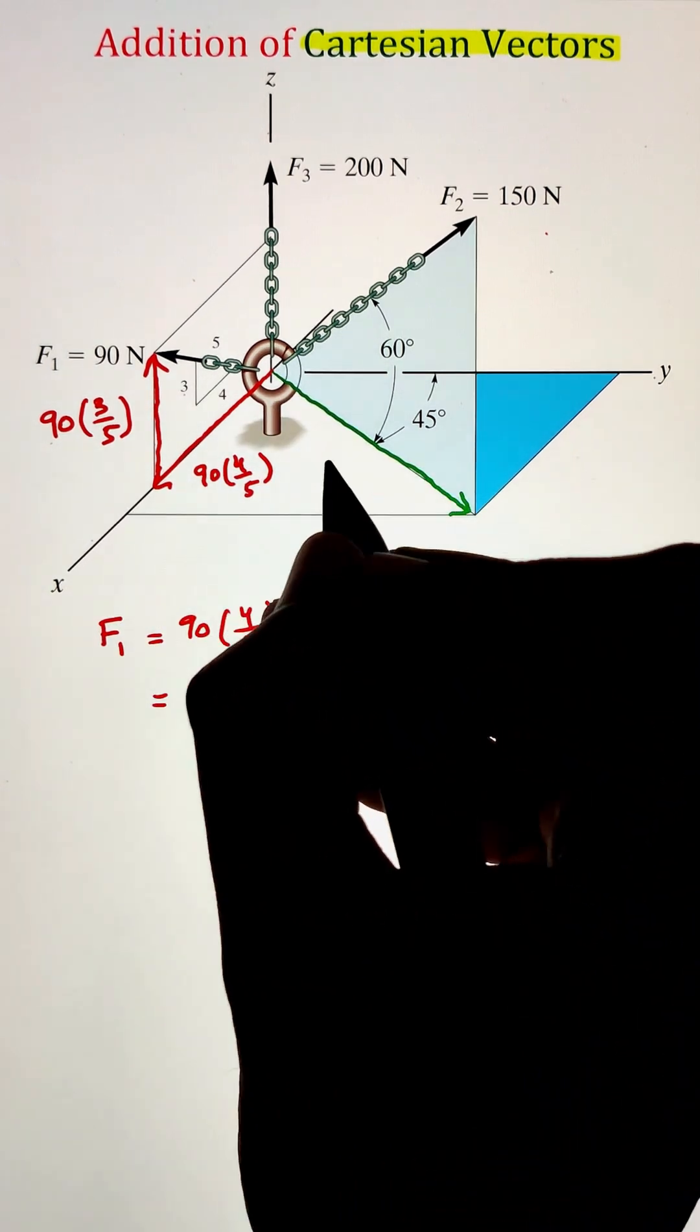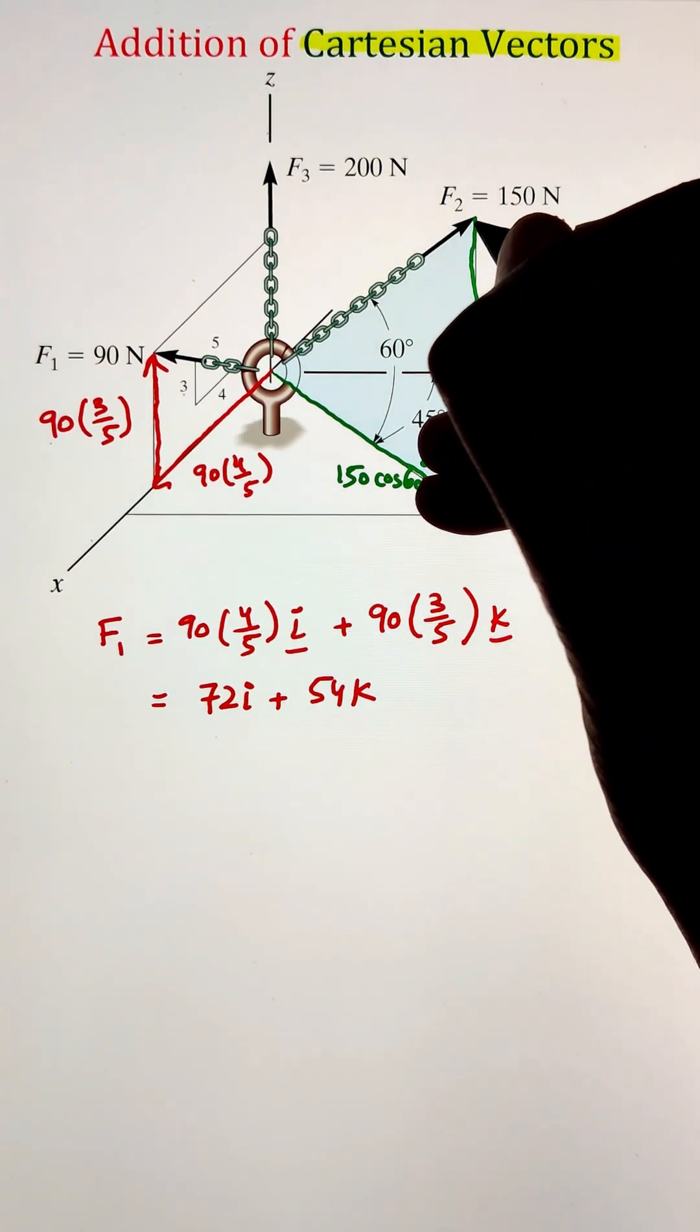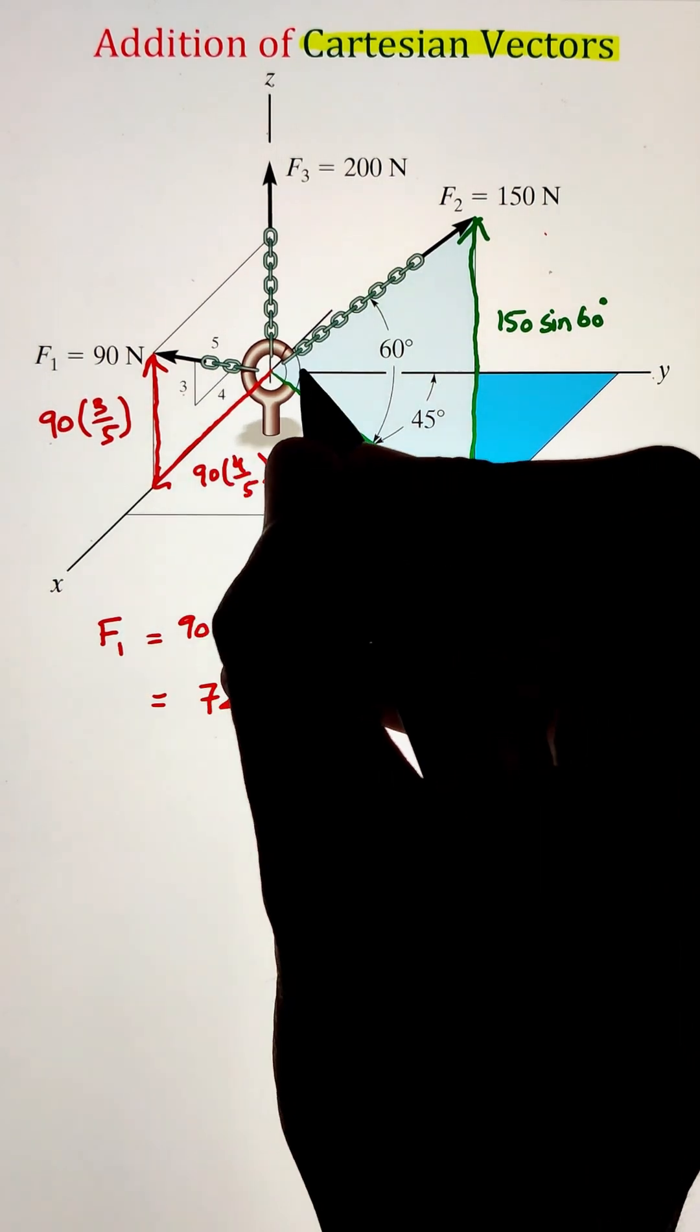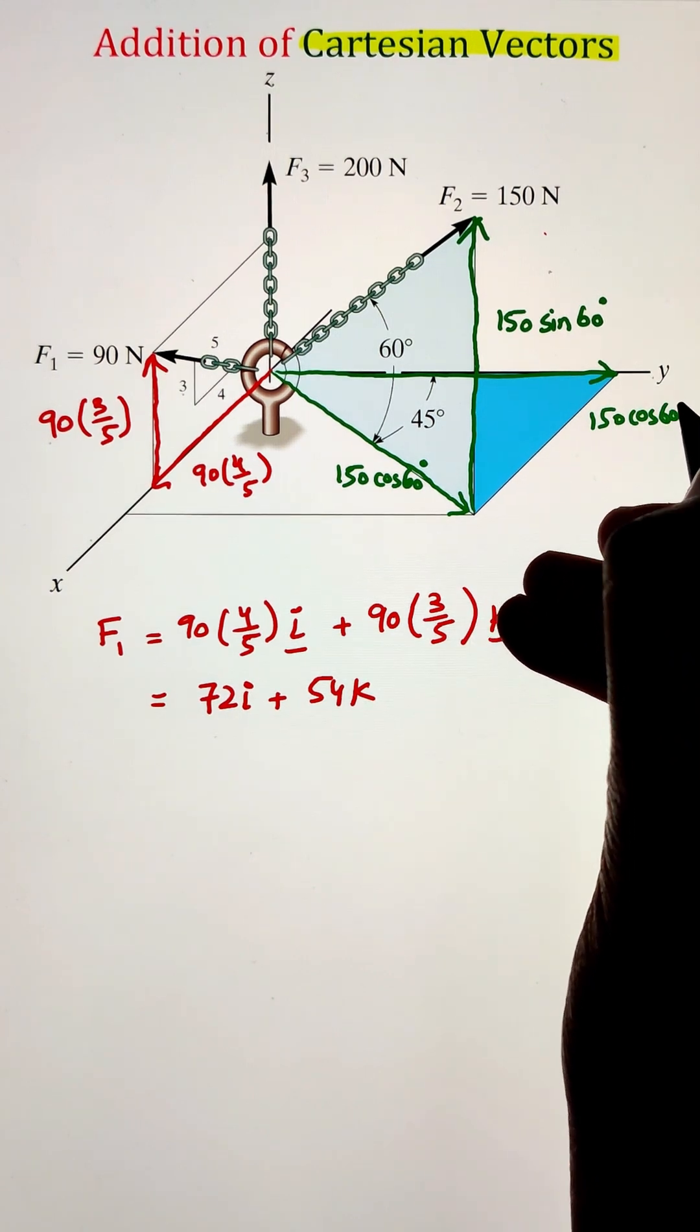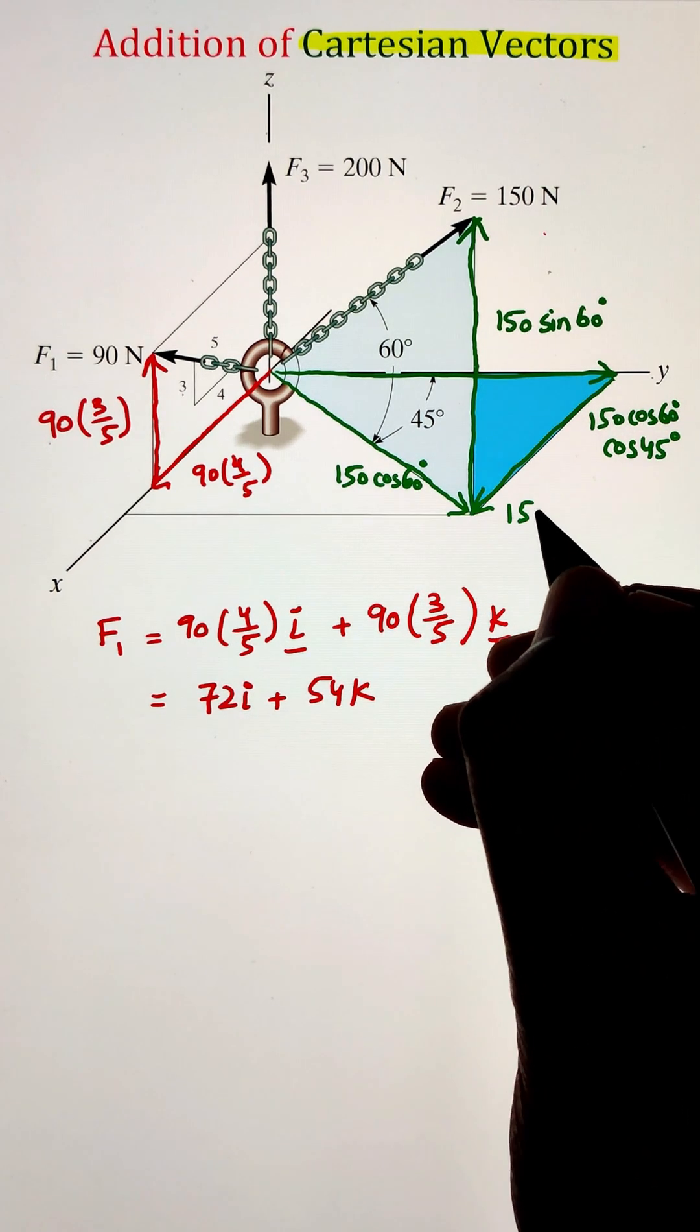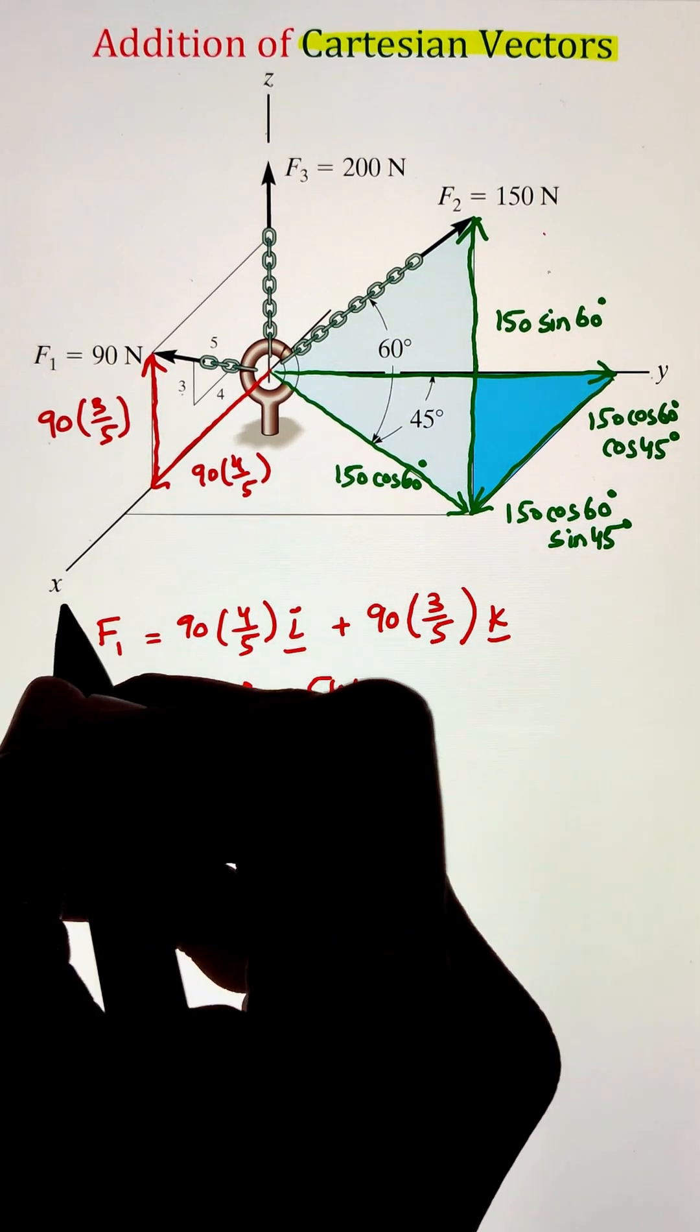Next, we have F2 force of 150 Newton that is acting in the 3D space. First of all, it can be projected along the X, Y plane by taking the cos 60 function of that force, whereas the sin 60 function will project it vertically along the Z direction. Next, the component of the force in the X, Y plane needs to be further projected along the X and Y direction. By taking the cos function of 45 degrees, it will project that component along the Y direction, whereas the sin 45 function of the force will project it along the X direction.